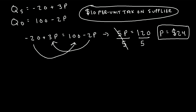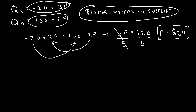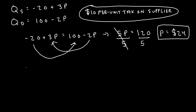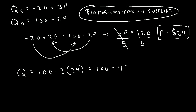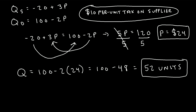Now to find the market equilibrium quantity, we take this 24 and plug it into either one of these equations — it doesn't matter which one. Let's choose the market demand equation. So q is equal to 100 minus 2 times 24. That gives us 100 minus 48, which is 52 units. So the market equilibrium quantity is 52 units.